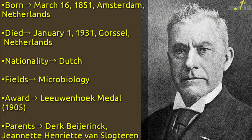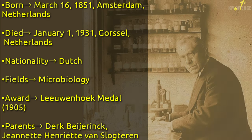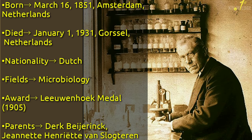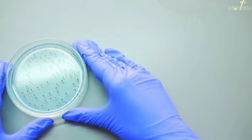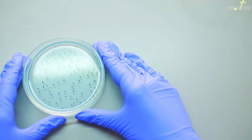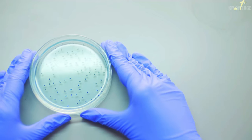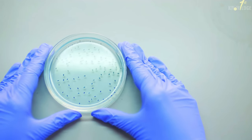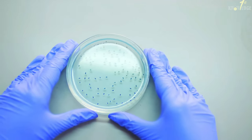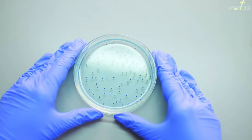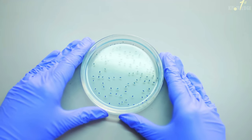Six years later, in 1898, Martinus Beijerinck, a Dutch biologist, independently discovered the same type of virus and named it a virus. Neither Ivanovsky nor Beijerinck understood that the virus was particles — for example, Ivanovsky thought it was a toxin produced by bacteria.